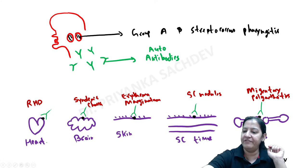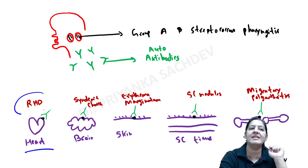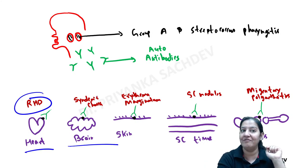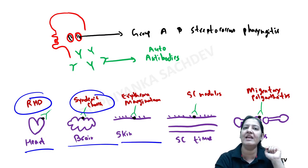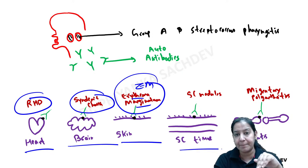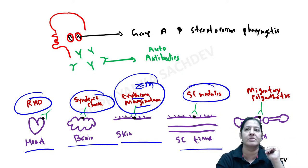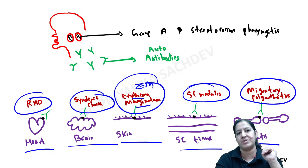Because of this cross-reaction, five organs develop five diseases: the heart develops rheumatic heart disease, the brain develops Sydenham's chorea, the skin develops erythema marginatum, the subcutaneous tissue develops subcutaneous nodules, and the joints develop migratory polyarthritis.